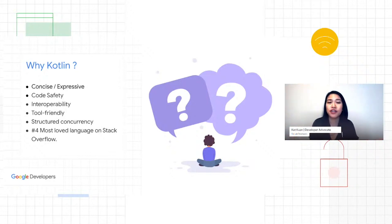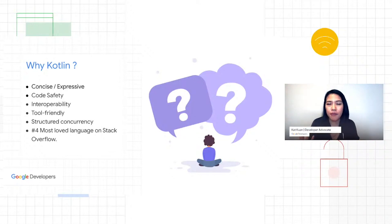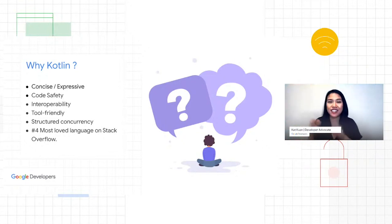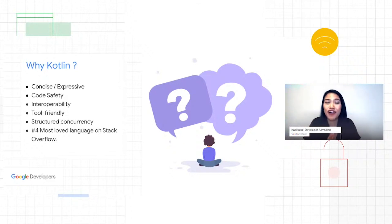Next is tool friendly. The creators of the language really wanted to make sure it works with existing tools and infrastructure. You can use IntelliJ, Android Studio, or Eclipse, among other popular tools. Another big benefit is structured concurrency. In an Android app, you typically have a lot of background operations like network calls or database operations, and the code can get complicated with callbacks and be hard to debug. With coroutines in Kotlin, you can make your code more sequential so it's easier to read. Kotlin has grown to be the number four most loved language among developers based on the Stack Overflow Developer Survey in 2019.